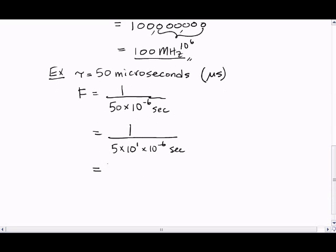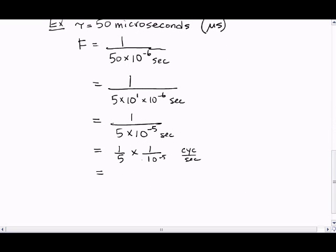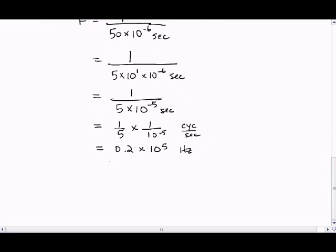So let's rewrite our denominator as 5 times 10 to the 1 times 10 to the minus 6 seconds, which gives us 1 over 5 times 10 to the minus 5 seconds, which we can rewrite as follows. So I'm going to put my units here. So 1 over 5 is 0.2, and 1 over 10 to the minus 5 is 10 to the 5 cycles per second, which is hertz.